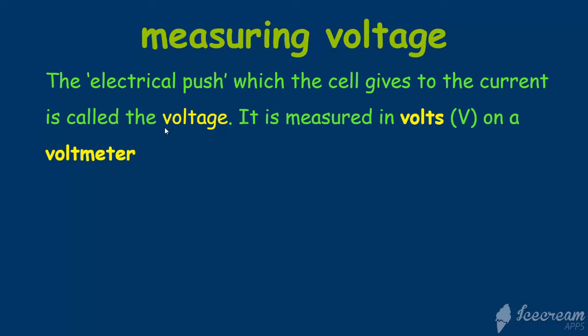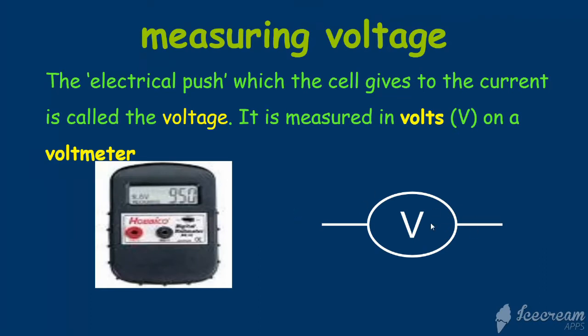The electrical push which the cell gives to the current is measured in volts. Volts with a capital V is the representation of the unit. The voltmeter is represented like a circle with a V inside. Volts, the unit, is represented with a capital V, and sometimes the voltage is also represented with a capital V. It's a little bit confusing.